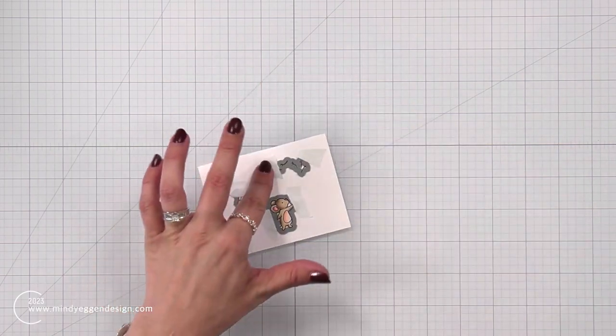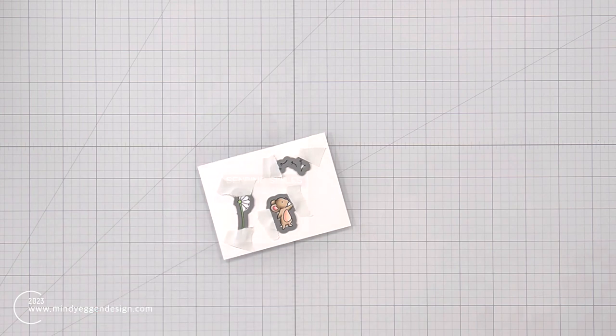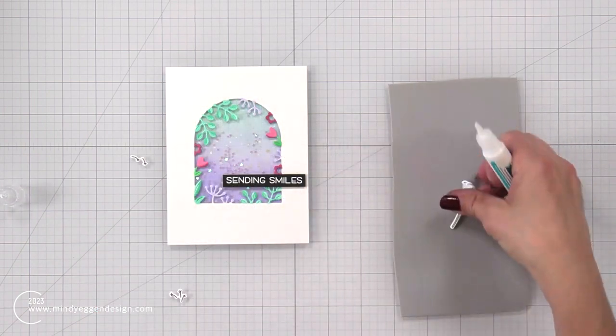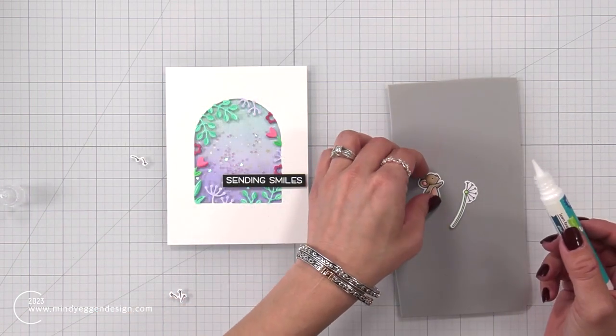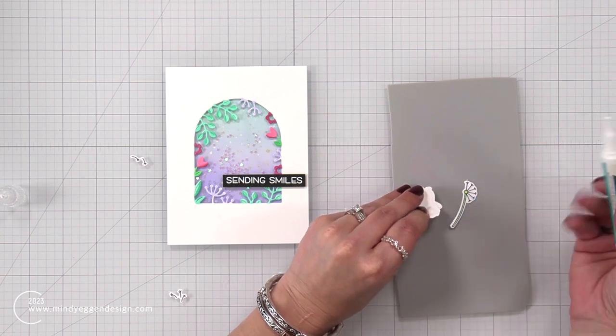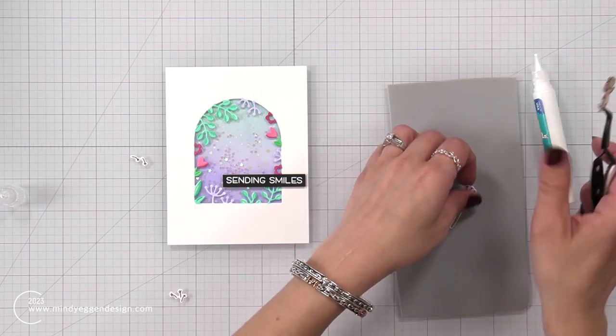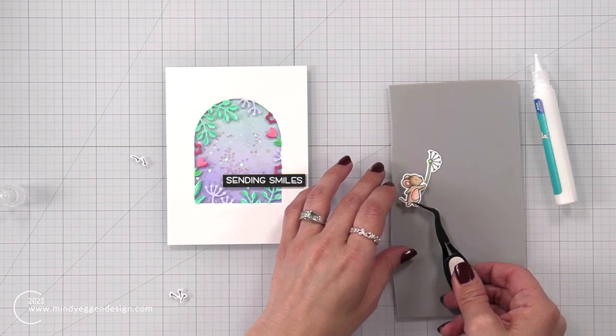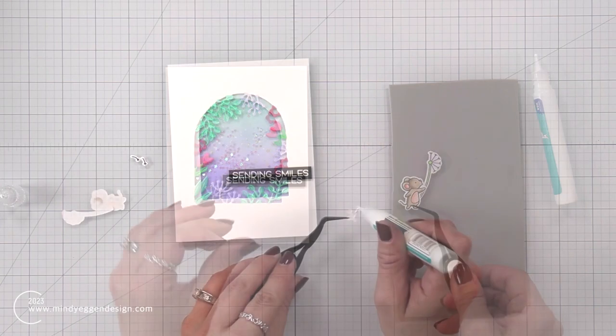I used the coordinating dies and some post-it tape to die cut my images out. And then I like to personally put my pieces together if I'm going to pop them up and there are two separate ones. So I added a little bit of liquid glue to the hand and added that to the dandelion piece there.